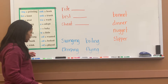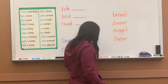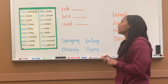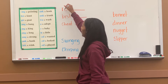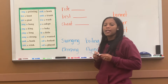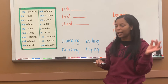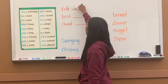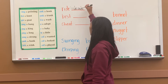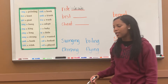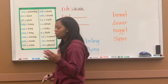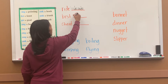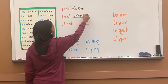All right, so let's go ahead and start with reviewing some rhyming words. Remember, words that rhyme sound the exact same at the end of the word. So I have the word 'ride.' What are some words that sound just like 'ride' and have that 'id' sound? You can say 'hide' or 'side.' 'Best.' What words sound just like 'best' and have that 'est' sound at the end? You can say 'nest' or 'chest.'